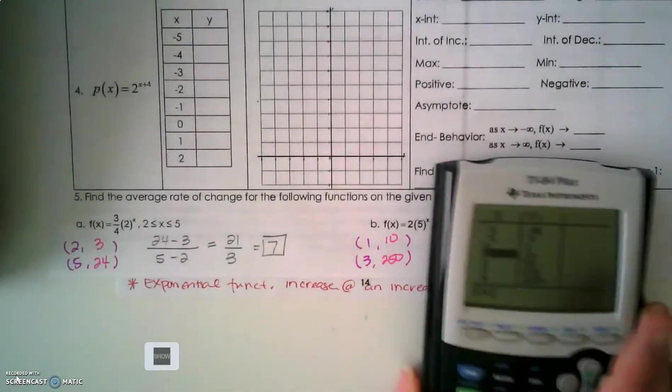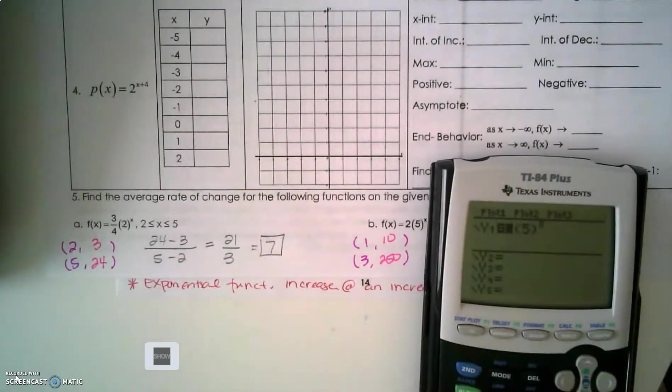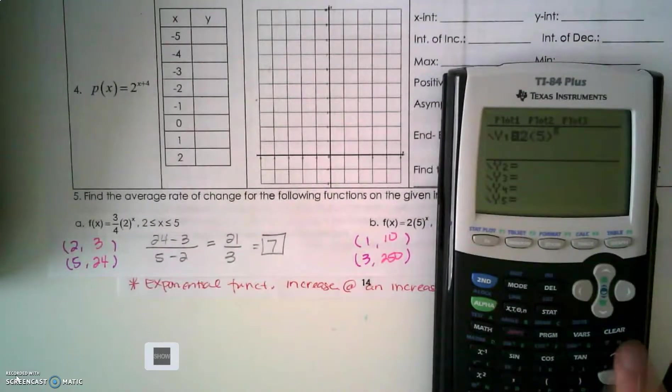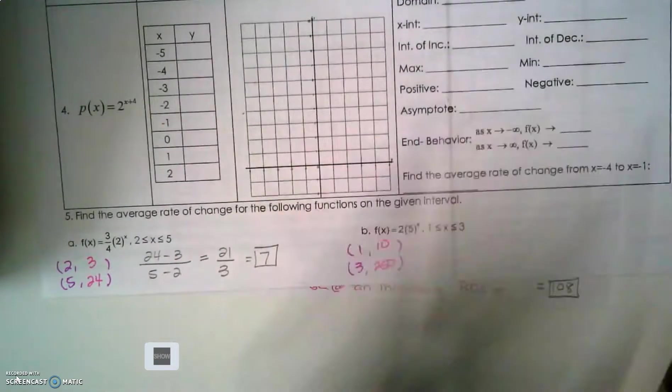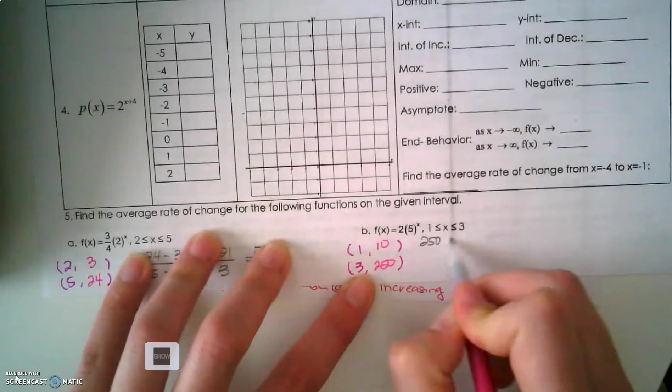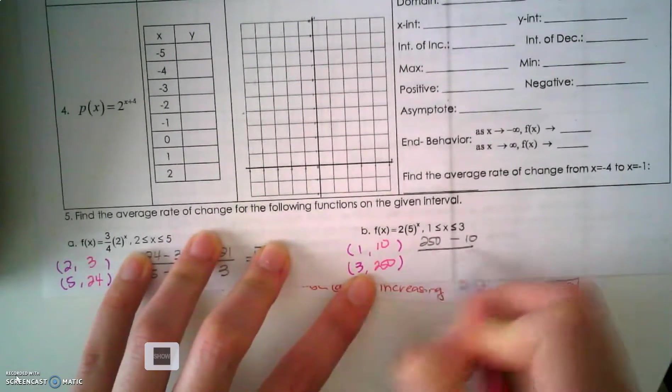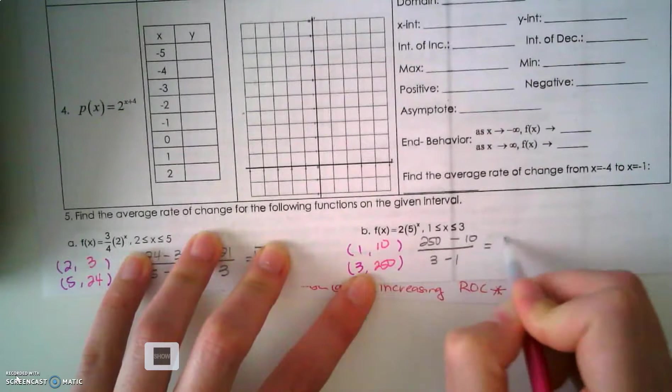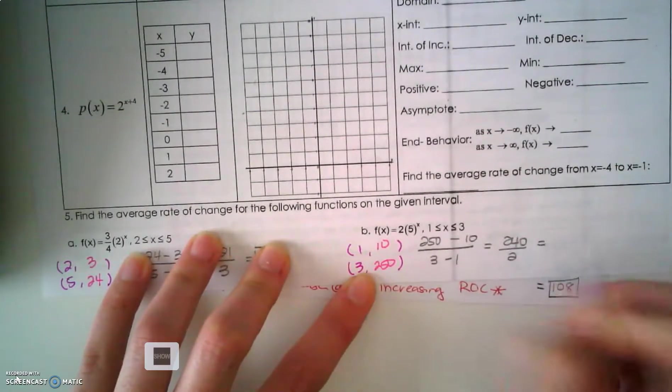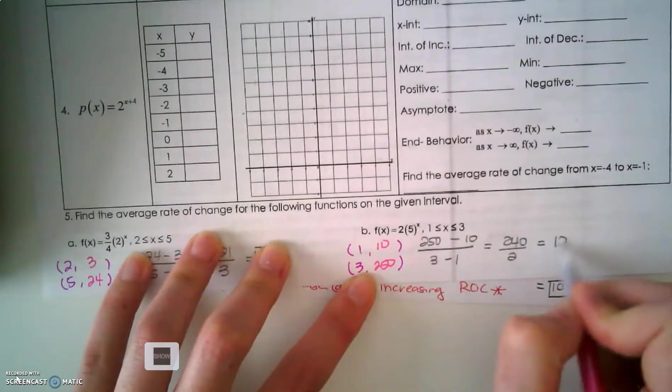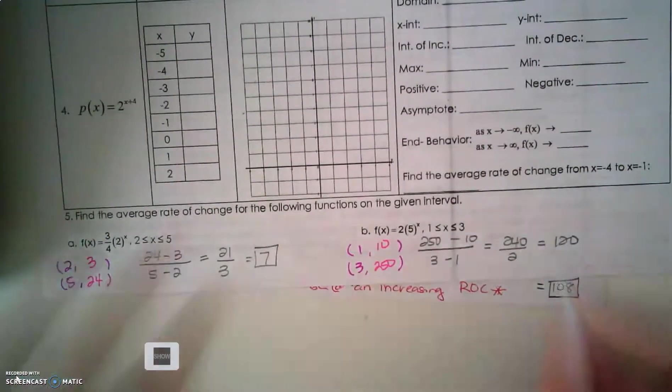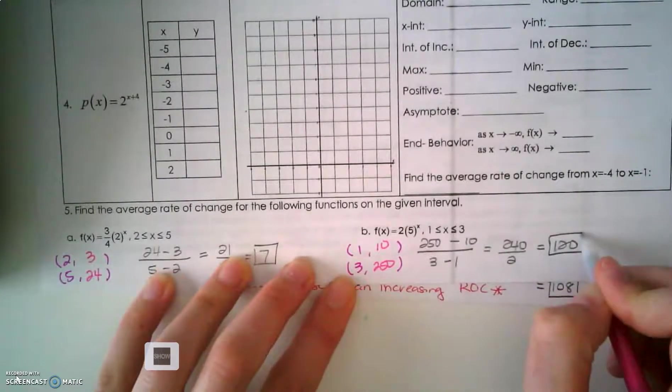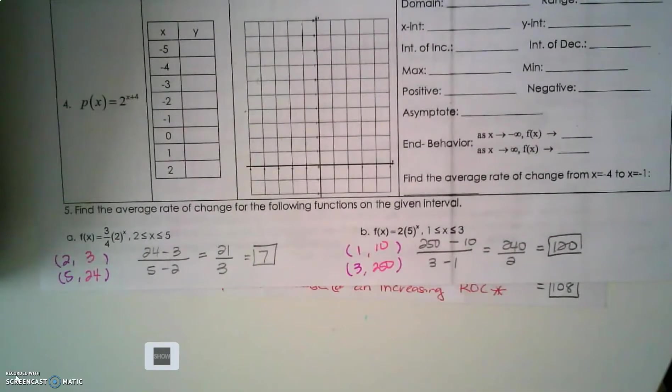This one, I created a table in my graphing calculator. Remember, we go back to y equals to do that. And we use the caret button as our exponent. So, second table. And then I just filled in those values. So, we're going to have 250 minus 10 all over 3 minus 1. So, 240 divided by 2 looks like 120. Double check my math. 250 minus 10, 240. 3 minus 1 is 2. 120. Message me on Remind if you still need help with rate of change.